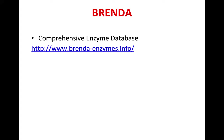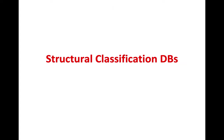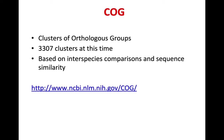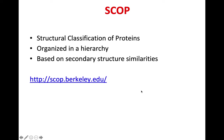Structural classification databases include COGs — Clusters of Orthologous Groups. Remember the difference between homology, orthology, and paralogy. COGs are based on interspecies comparisons and sequence similarities, with currently 3,307 clusters, and it is embedded within NCBI. SCOP — Structural Classification of Proteins — is organized in a hierarchy and based on secondary structure similarities only, not 3D structure. It is based at the University of Berkeley.